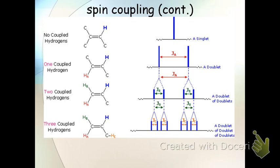So what happens when the coupling constants are different? And a place that you can see this fairly commonly is on alkenes, that is, double bonds.